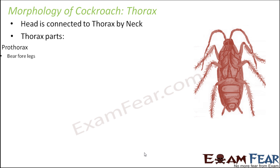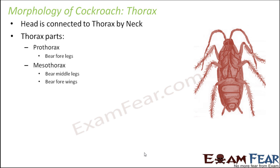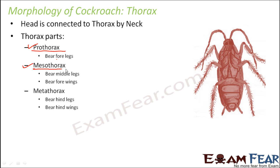There are three parts of the thorax: prothorax, mesothorax, and metathorax. 'Meso' means middle, so the middle portion is mesothorax. The initial portion is prothorax and the later portion is metathorax.